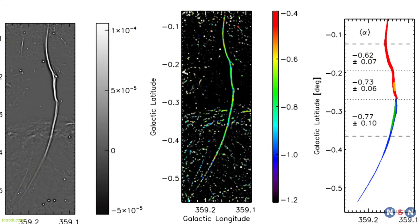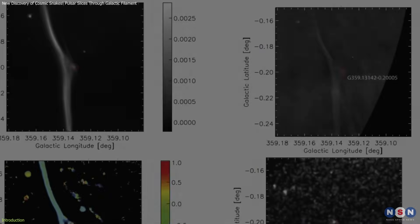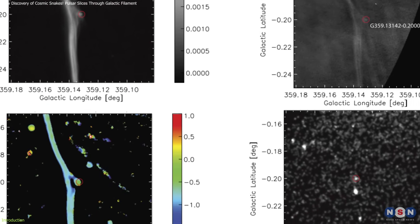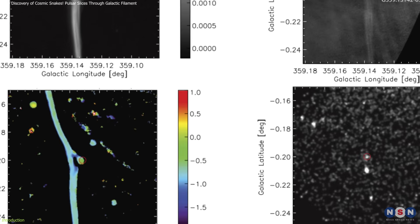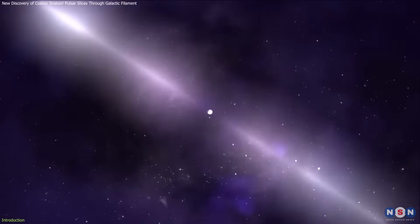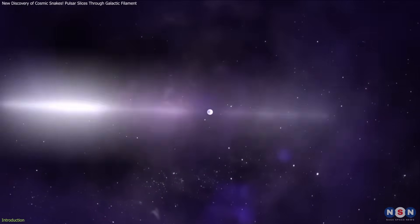Stretching 230 light-years near the galaxy's core, this dense, magnetically-aligned filament shows a puzzling fracture right where astronomers detected a strange radio signal. The evidence points to a high-speed pulsar slamming into the structure.